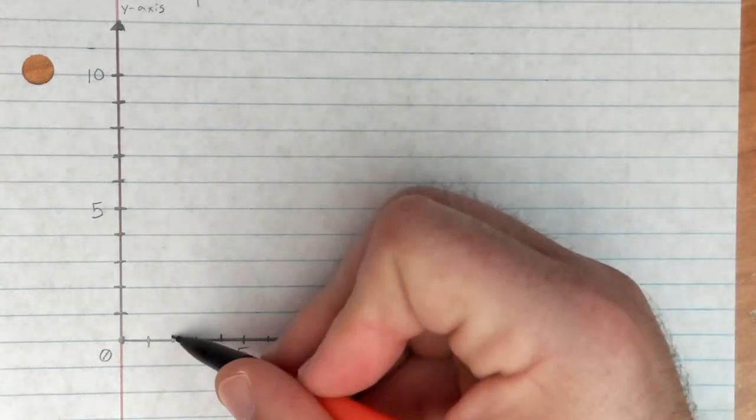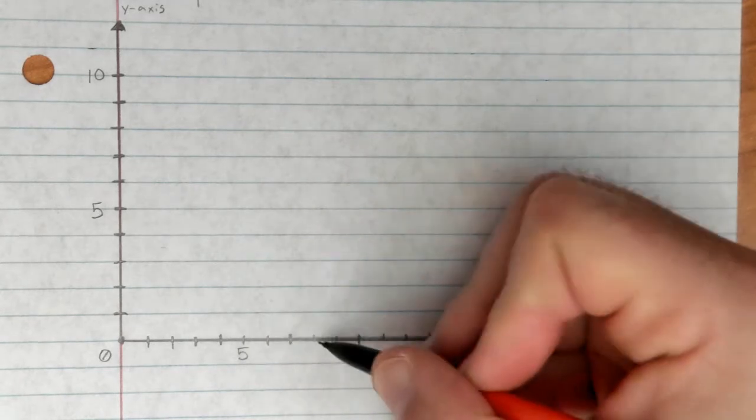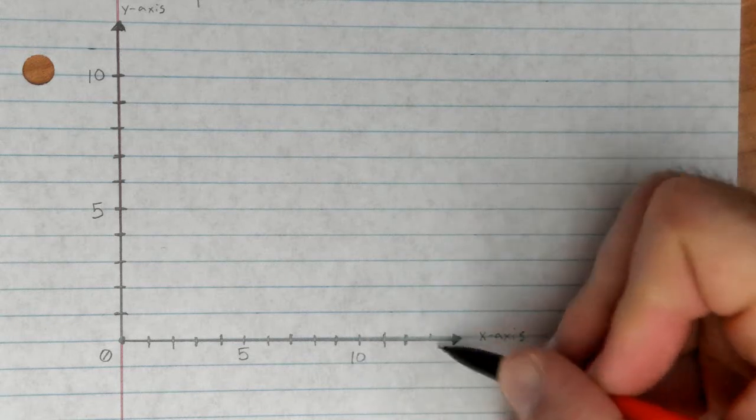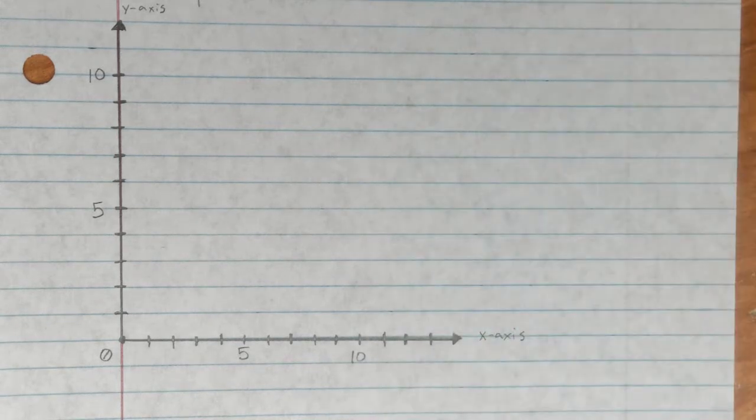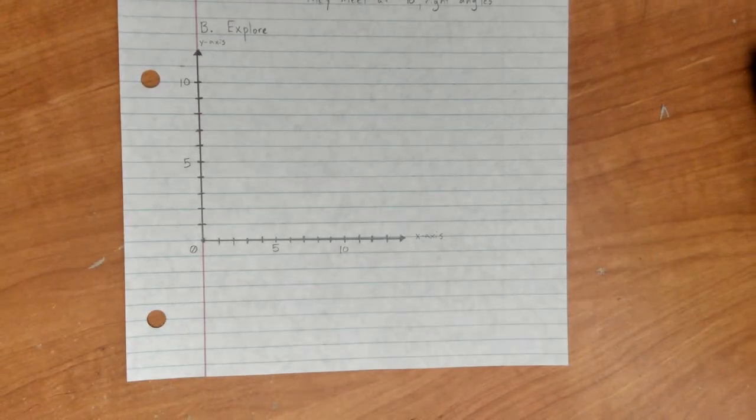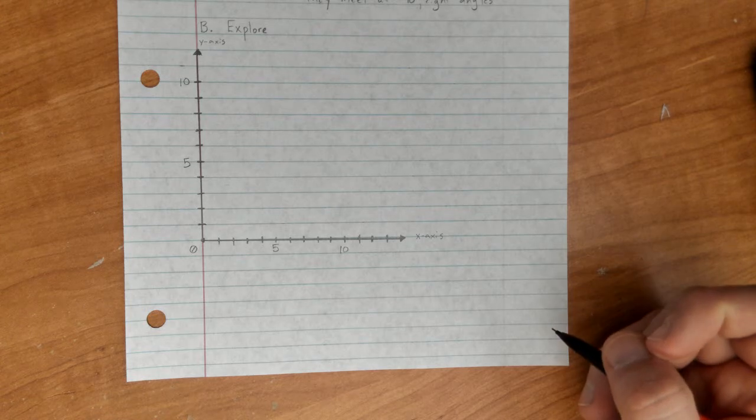Now you can do this anytime you need to make a coordinate plane. Anytime you need to make a coordinate plane. Again, graph paper makes this a lot easier, but there's your process if you don't have graph paper. Now what we're going to do today is plot some points. So I am going to zoom out a little bit. If you need to pause the video to go back and finish that, then please do. But we're going to plot some points, and I want you to look for a pattern.